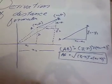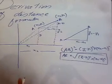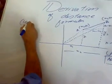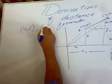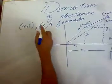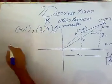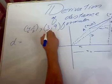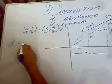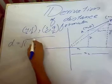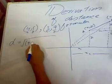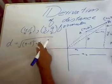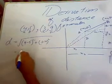Now we will apply this formula to one question. Suppose we need to find the distance between two points: (4, 5) and (3, 9). The distance is denoted by d. Here x1 is 4, y1 is 5, x2 is 3, and y2 is 9. Applying the formula: d equals square root of (y2 minus y1) squared plus (x2 minus x1) squared, which gives us square root of (9 minus 5) squared plus (3 minus 4) squared.